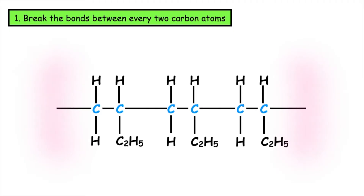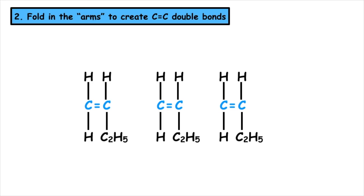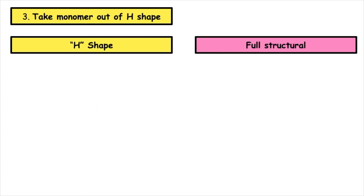Step number one: we want to break the bonds between every two carbon atoms. We then fold in the arms to create the carbon-to-carbon double bonds. This should create three monomer units. To take the monomer out of the H shape,